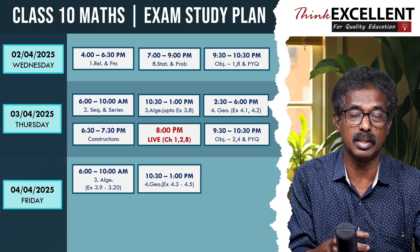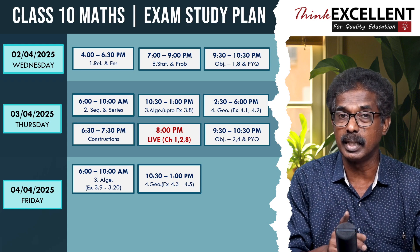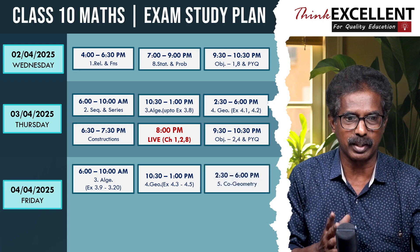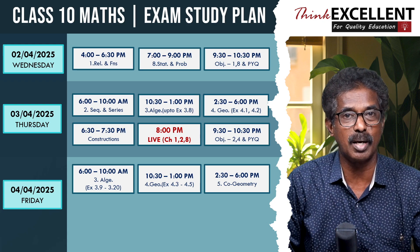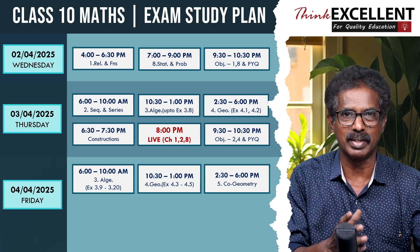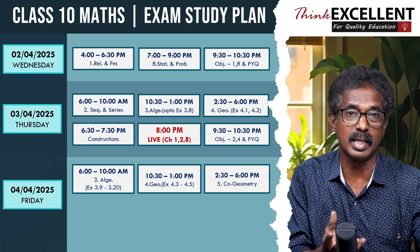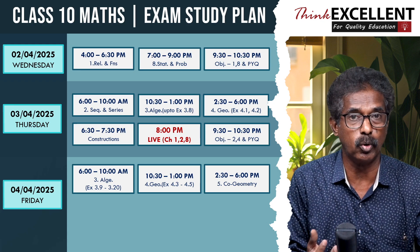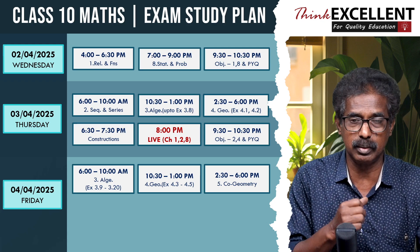After that, statement of theorems — Vieta's theorem. Then Chapter 5: Coordinate Geometry. Area of a triangle, area of a parallelogram, condition for collinearity — area of the triangle equals zero, then we say the points are collinear. That is the first part. Then we have slope — slope in different forms. Equation of a straight line, parallel lines, perpendicular lines. All of these you can go through.